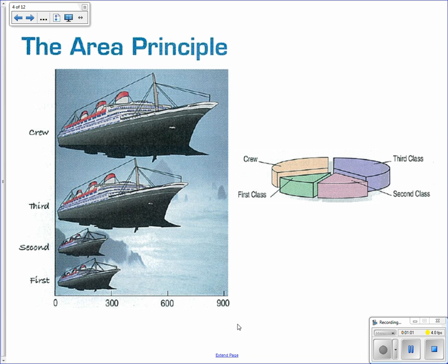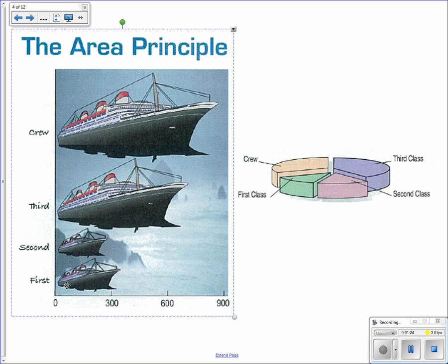Before we get into bar charts and the other kinds of ways of displaying, the area principle is very important. And the book says that the area principle is that the area occupied by that part of the graph should correspond to the magnitude of that value. The problem with this one is that, yes, it's measuring it by length, but the height is also changing, and so it's not proportional.